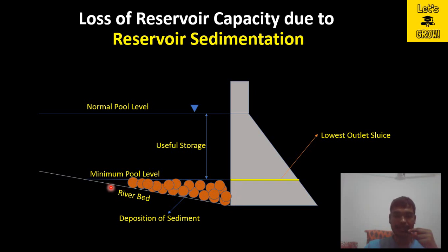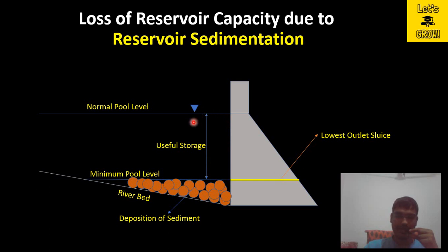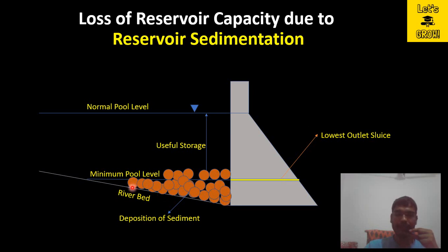In this figure you can see that these sediment particles completely occupy the dead storage. Since dead storage is not very useful to us, there is no major problem in the operation of the dam at this stage. But once these sediment particles start to occupy the volume of useful storage, the capacity of the reservoir starts to reduce. Right now the reservoir can store water from the minimum pool level to the maximum pool level, but if more sediments come they will occupy the useful storage volume and the reservoir capacity will decline.